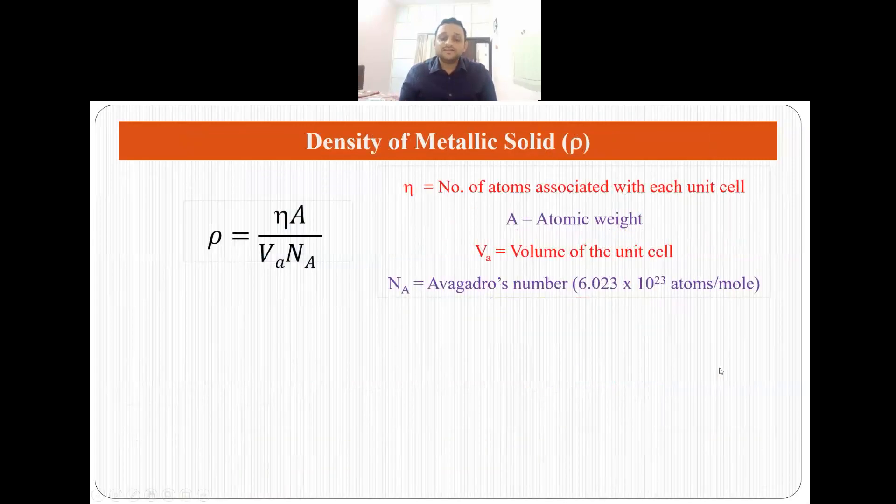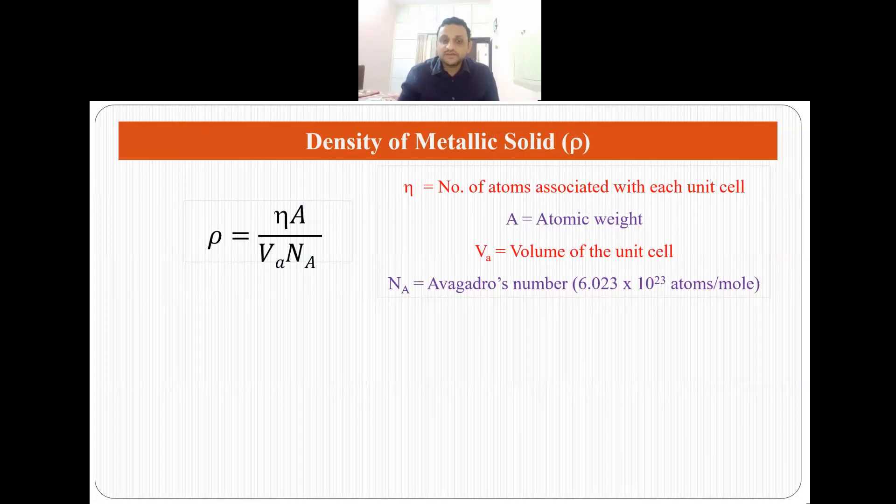Now let's talk about the density of metallic solid or how dense a metallic solid will be. Density of metallic solid is given by rho which is number of atoms associated with each unit cell, A that is atomic weight, divided by V_a that is volume of unit cell times N_A which is Avogadro's number. So if we put all these parameters we will be able to figure out what is the theoretical density of the metallic solid which we are working on.